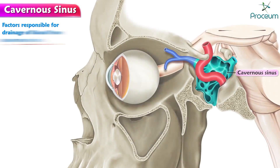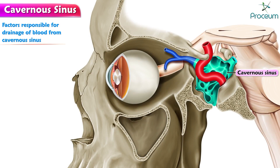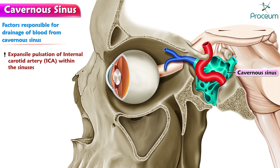The factors responsible for drainage of blood from the cavernous sinus are the expansile pulsation of the internal carotid artery, or ICA, within the sinuses; gravity; and the position of the head.